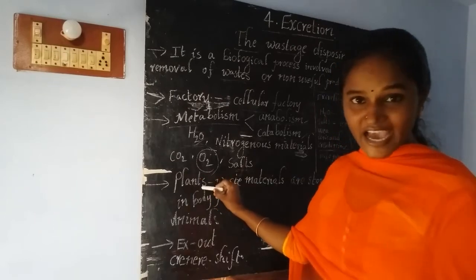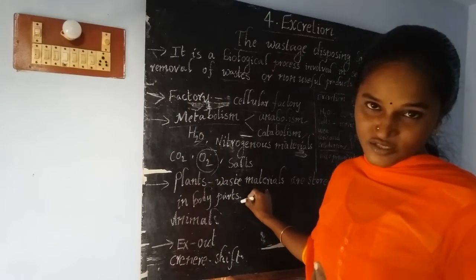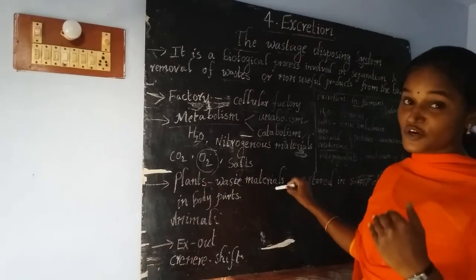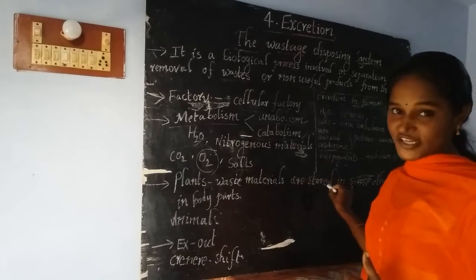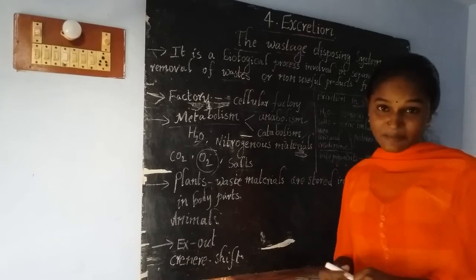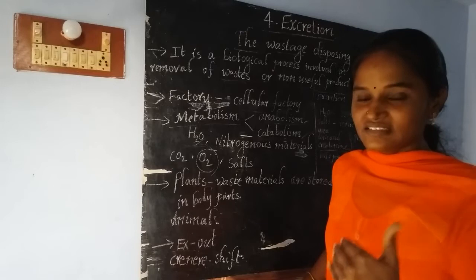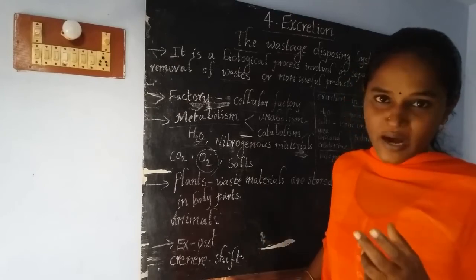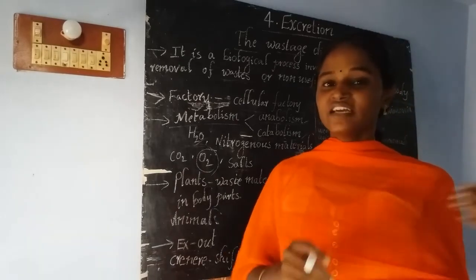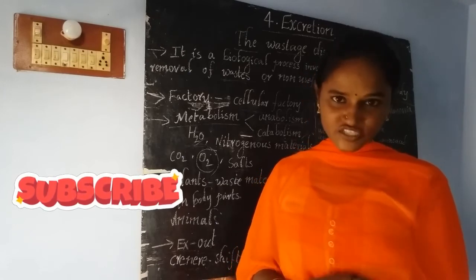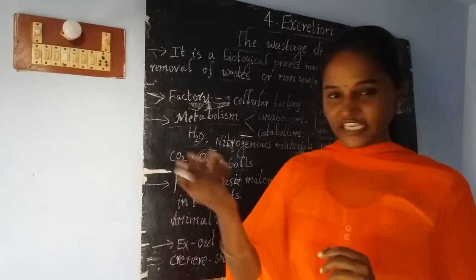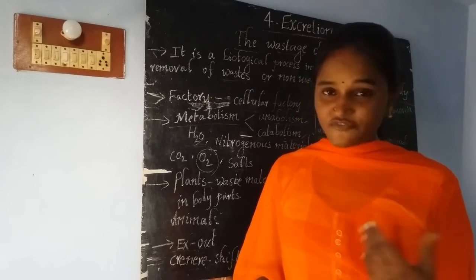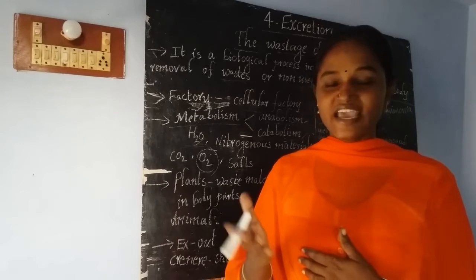Plants are also capable of producing waste, but they store waste materials in some other useful form in different body parts — like fruits, leaves, stem, bark, and seeds. They choose different body parts to store waste. Finally, they do excrete the waste: when leaves ripen and change color, they fall off; when fruits ripen, they fall to the ground. That is how plants excrete their waste.